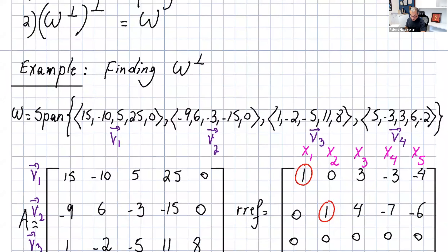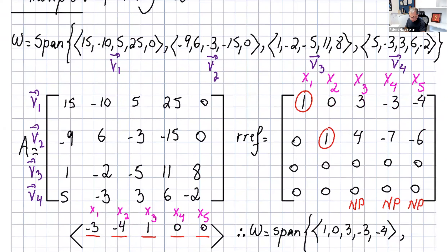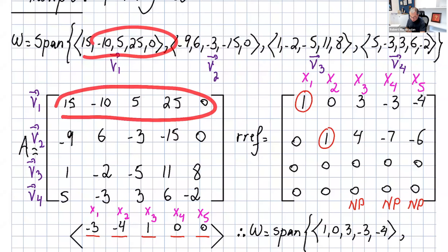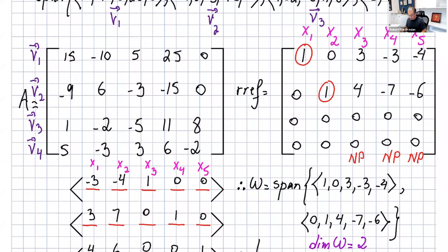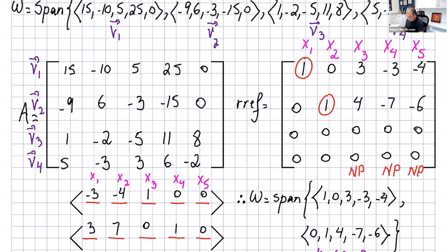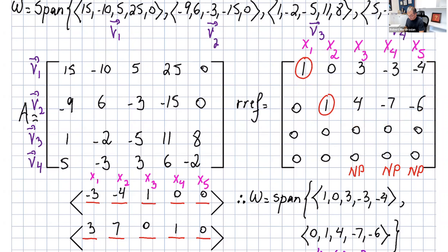Now let's look at another example: finding w-perp where w is spanned by four vectors in R5. Write all those vectors as rows of a matrix — that's v1, v2, v3, and v4. Find the RREF of that matrix. The basis for the row space w consists of the non-zero rows in the RREF, which gives us two vectors.